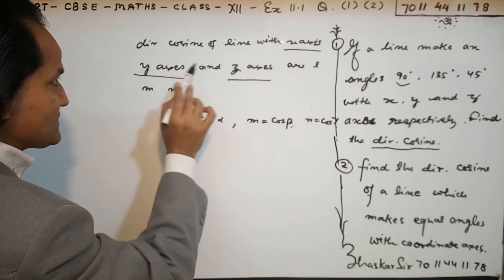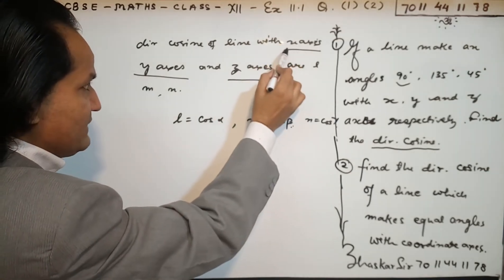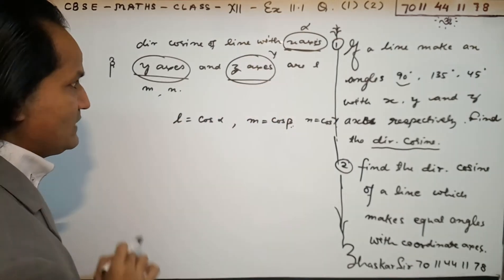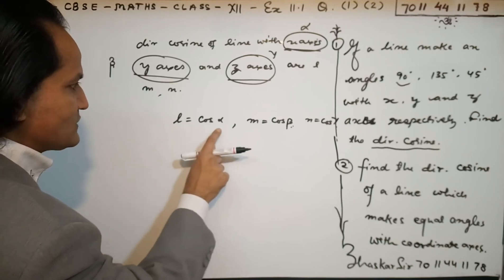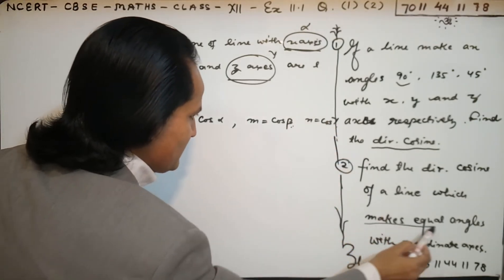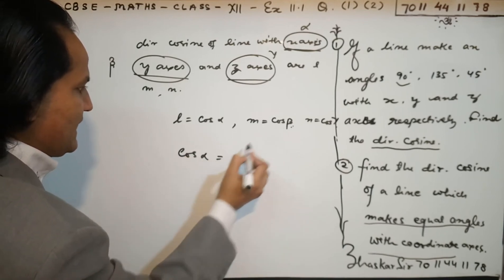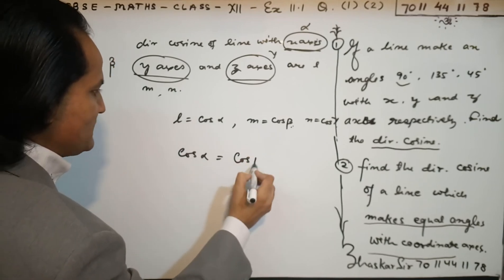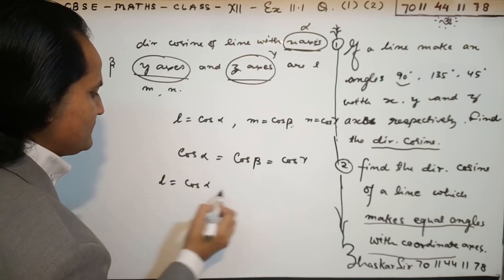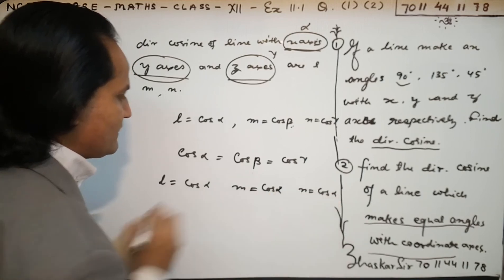The direction cosines of the line with the x-axis, y-axis, and z-axis are L, M, N. Suppose alpha is the angle with the x-axis, beta is the angle with the y-axis, and gamma is the angle with the z-axis. The direction cosines are cos alpha, cos beta, and cos gamma. Since the line makes equal angles with all coordinate axes, cos alpha equals cos beta equals cos gamma. Therefore L equals cos alpha, M equals cos alpha, and N equals cos alpha.